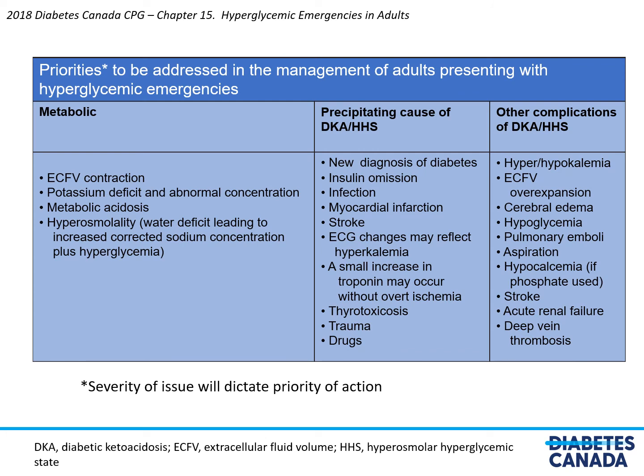To summarize the priorities in the management of adults presenting with hyperglycemic emergencies: the metabolic ones include ECF volume contraction, potassium deficit and abnormal concentration, metabolic acidosis, and hyperosmolality — the water deficit leading to increased corrected sodium concentration plus hyperglycemia. Precipitating causes of DKA and HHS must be sought, including new diagnosis of diabetes, insulin omission, infections, myocardial infarction, and stroke. ECG changes may reflect hyperkalemia; a small increase in troponin may occur without overt ischemia. Also consider thyrotoxicosis, trauma, and drugs.